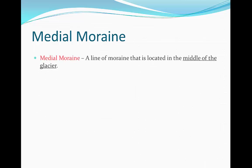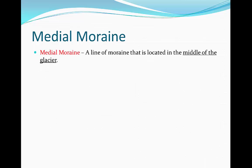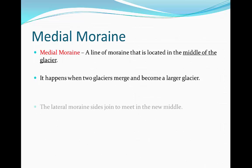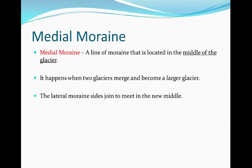Medial moraine is a line of moraine located in the middle of the glacier. It happens when two glaciers merge and become a larger glacier. The lateral moraine sides join to meet in the new middle.